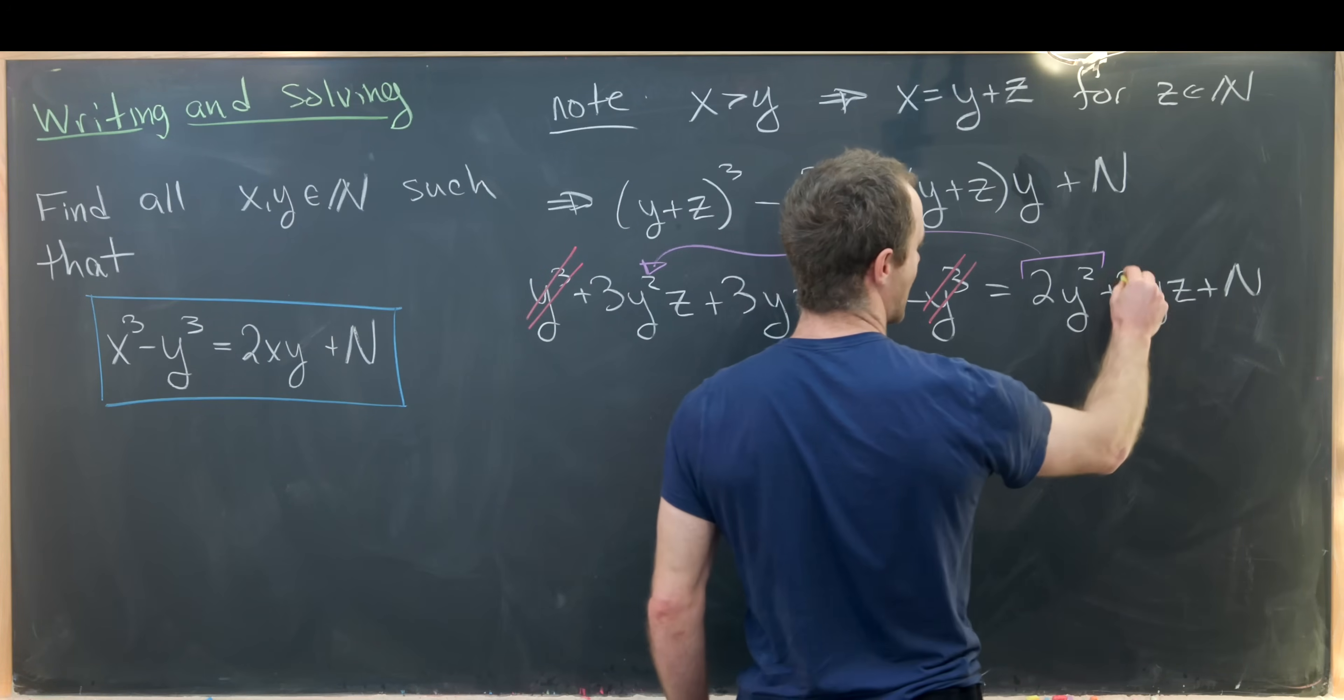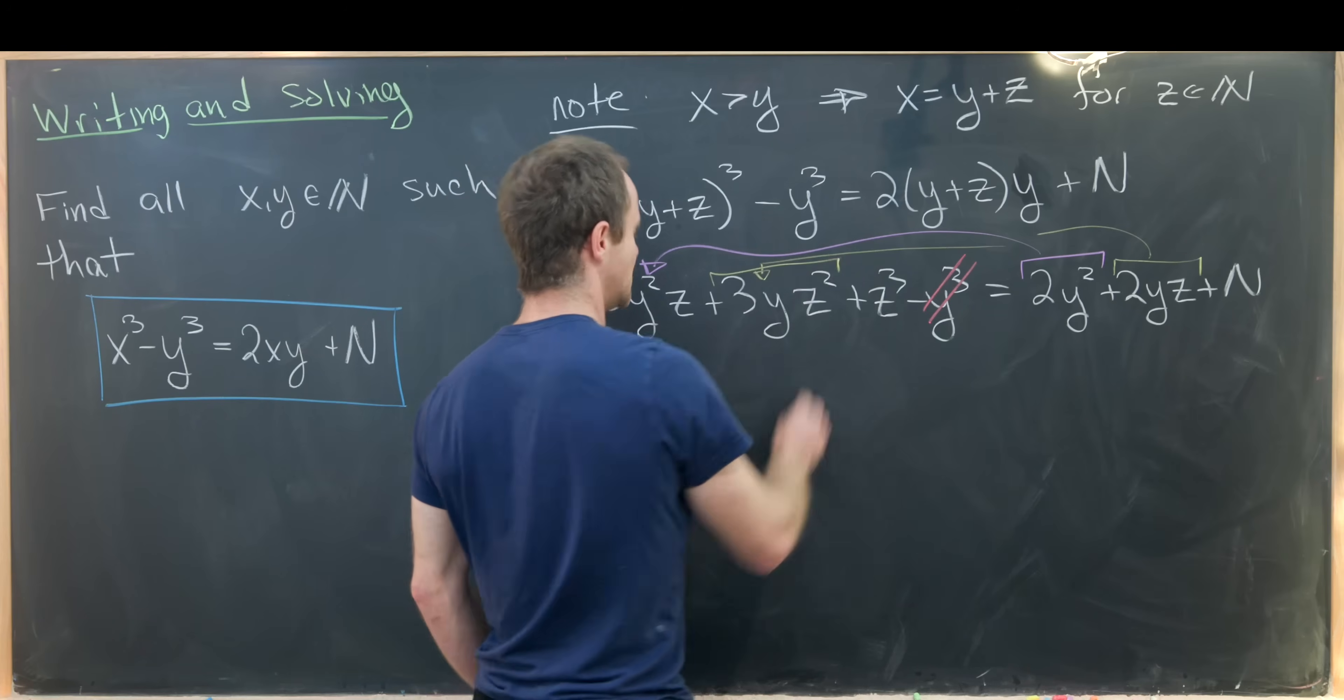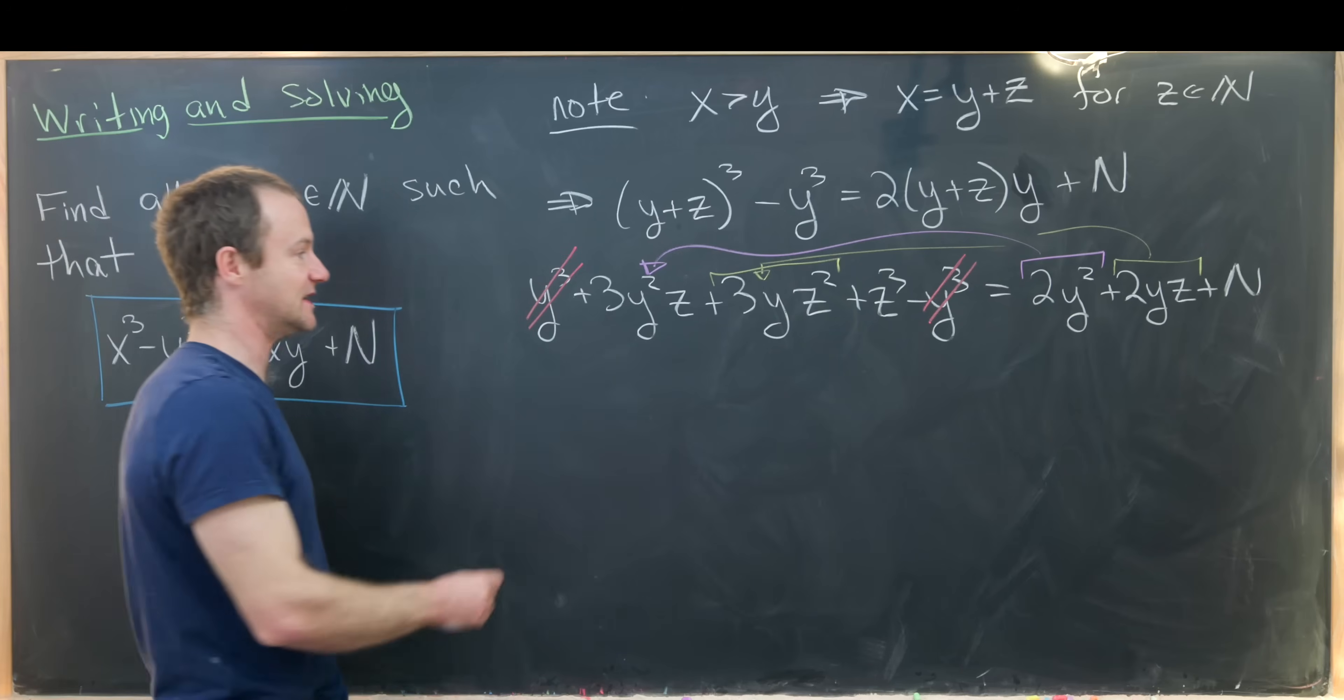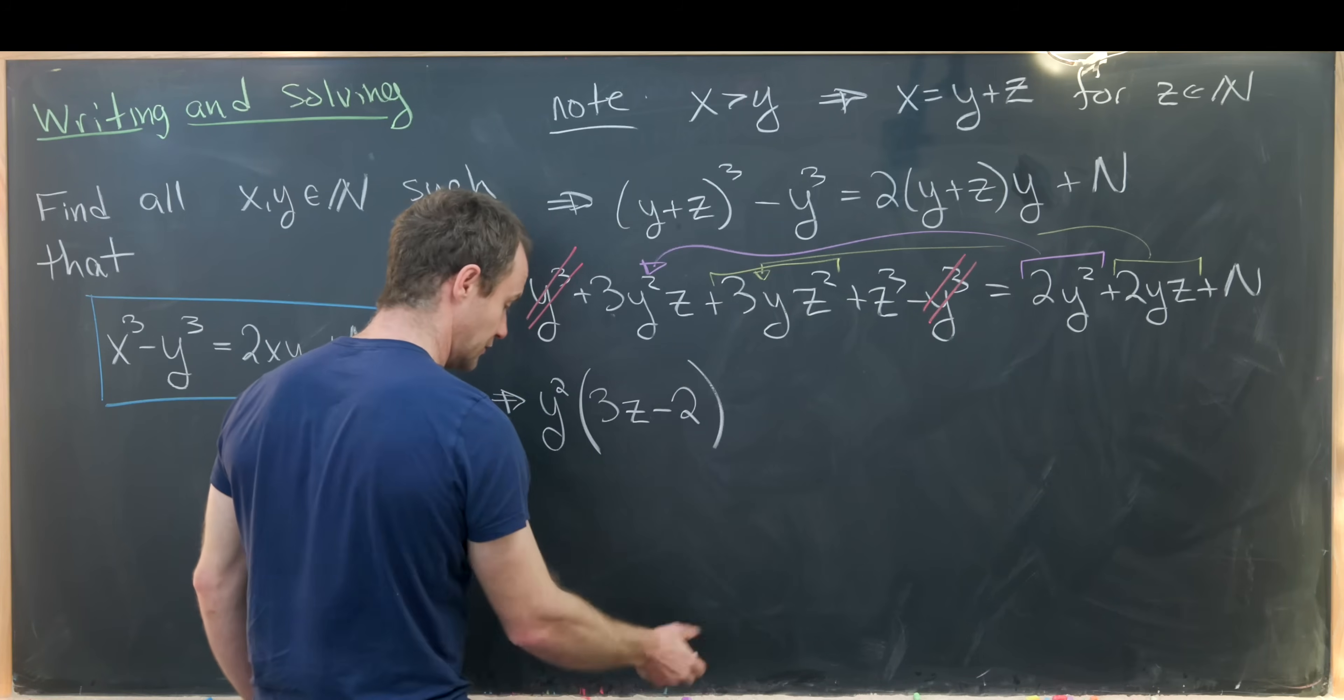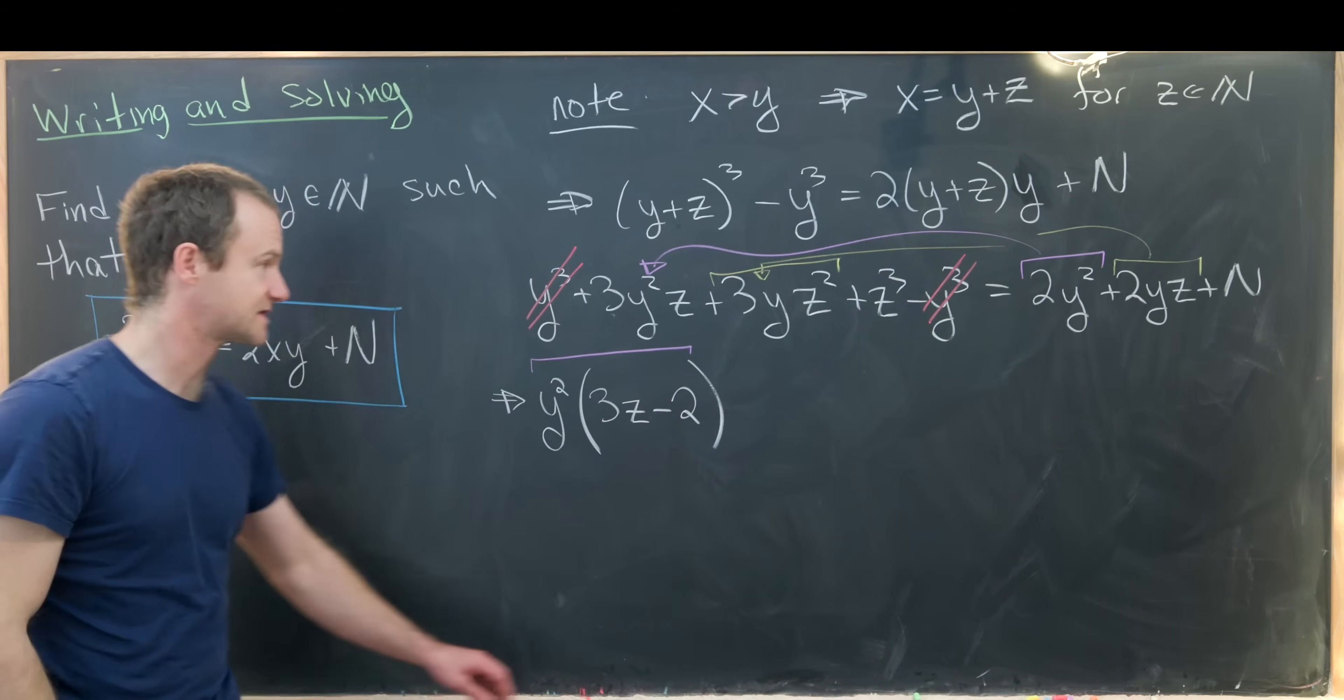And then likewise we can take this yz term right here and combine it with this which is really of the form y times z times z. We'll have y² times (3z - 2).